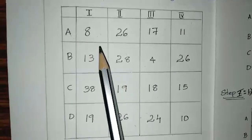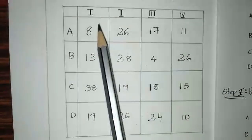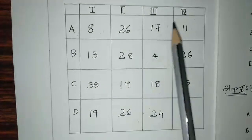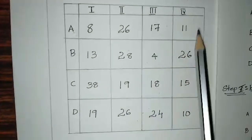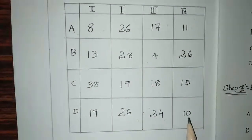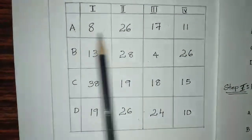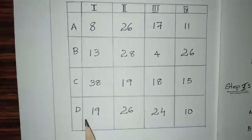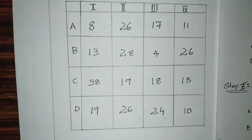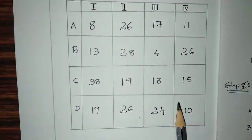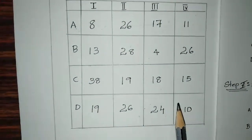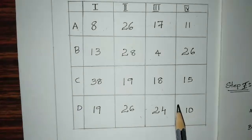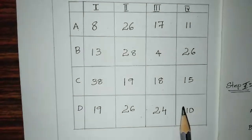Here the number of columns is 1, 2, 3, 4 and the number of rows is 1, 2, 3, 4. The number of columns and number of rows are equal. Therefore, it is a balanced assignment problem.